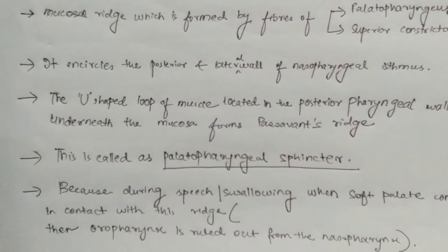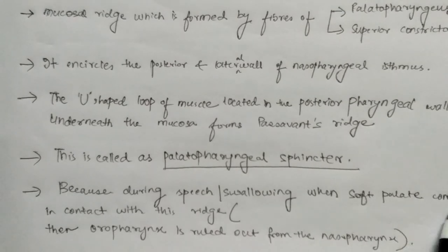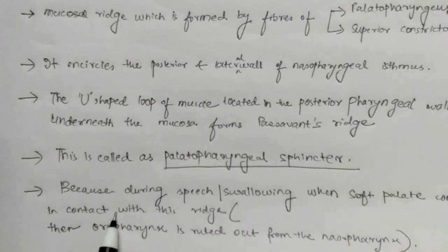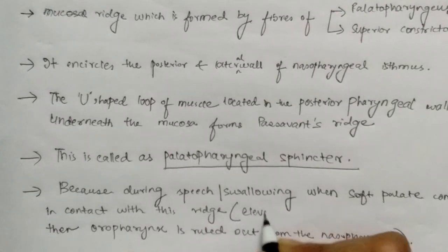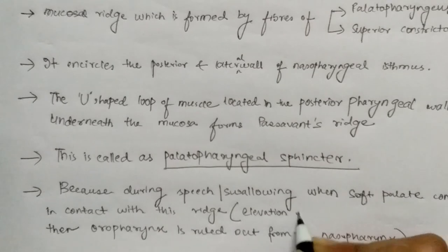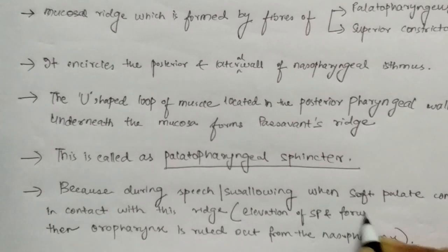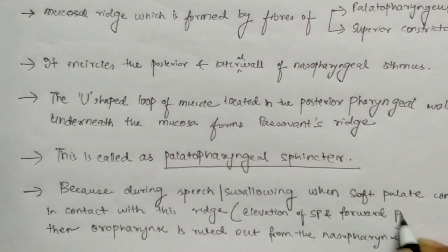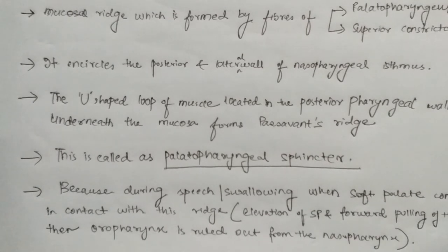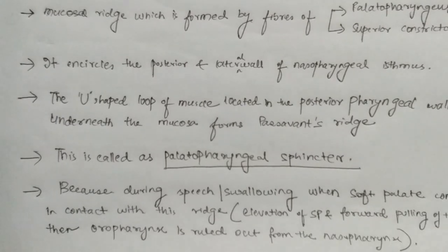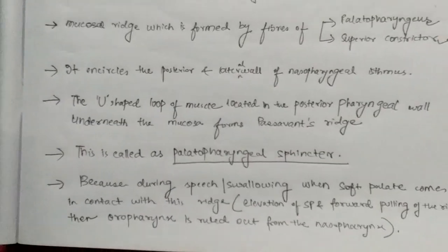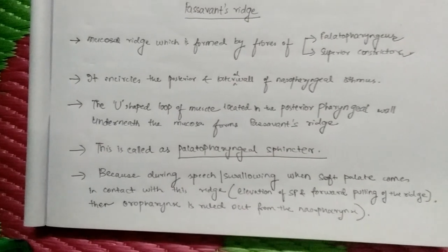A question may be asked: how does the soft palate make contact with the ridge? This is by the elevation of the soft palate and forward pulling of the ridge. This was all about Passavant's ridge.